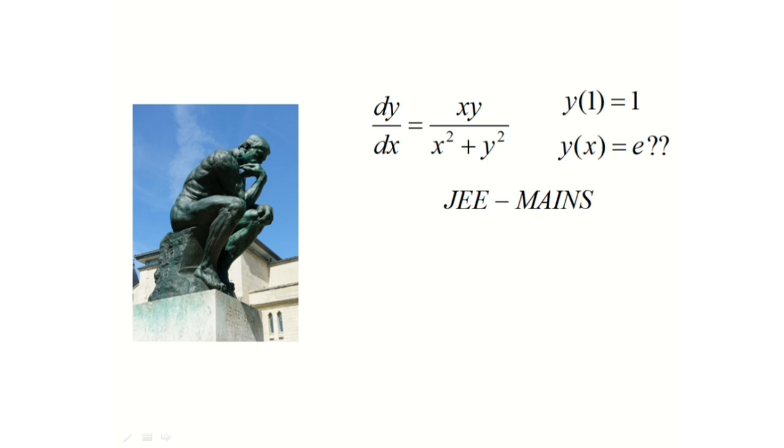To solve this, let's substitute y equals x times some other variable t. After this, we will get dy by dx equals t plus x times dt by dx using the chain rule. And this equals xy by x square plus y square. And if we again substitute y equals xt, we will get x square t upon x square plus x square t square.